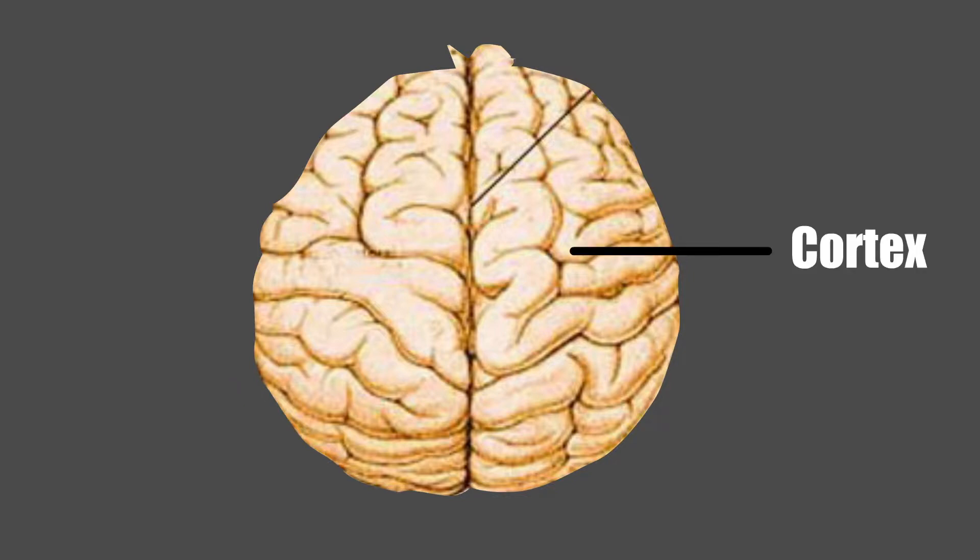The surface layer of each hemisphere is called the cortex and is composed of grey matter. The cerebral cortex is thrown into folds called gyri, separated by fissures called sulci. The sulci divide the cerebrum into lobes.